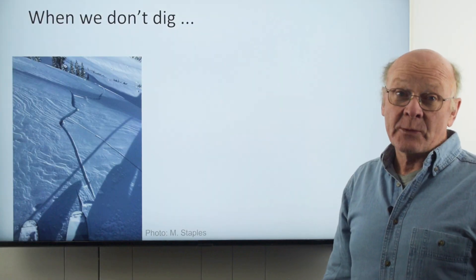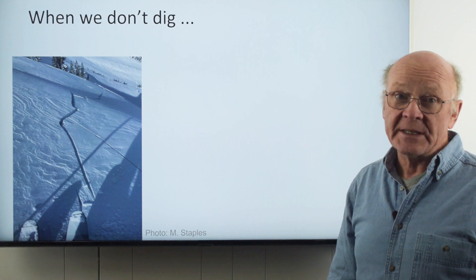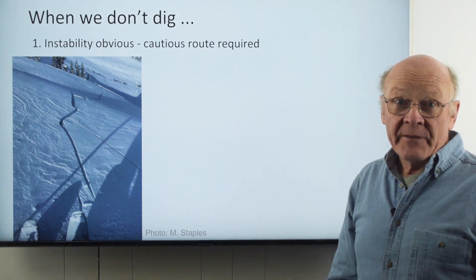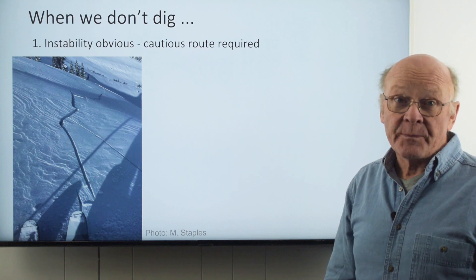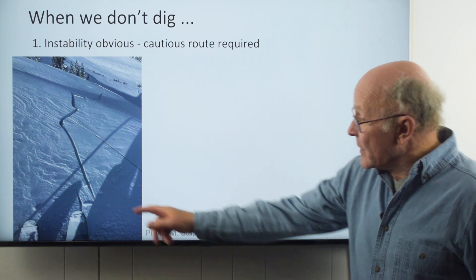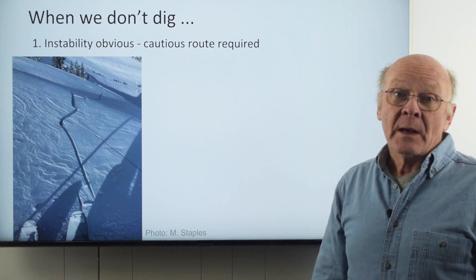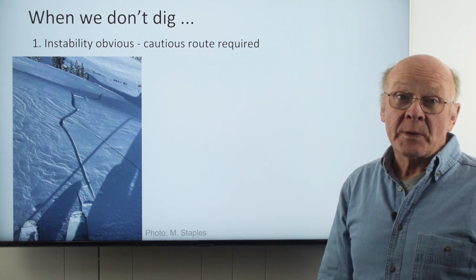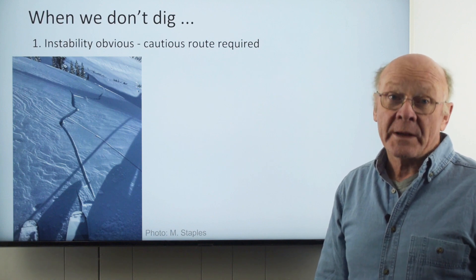Now let's look at situations in which we often don't do instability tests. First, the instability might be obvious, either from the bulletin or observations. If we see recent avalanches, shooting cracks, or are feeling woomphs, we select a cautious route that avoids any slope that can produce an avalanche big enough to bury or kill a person.